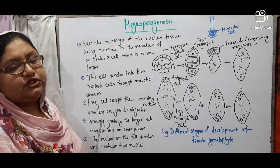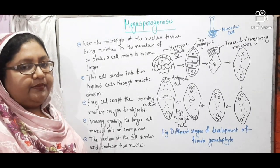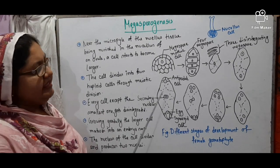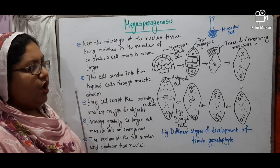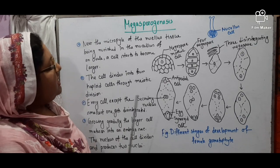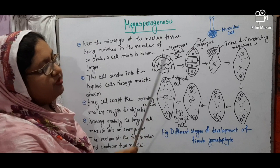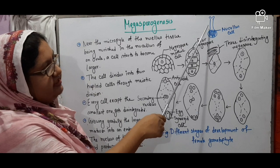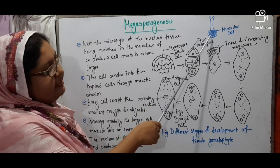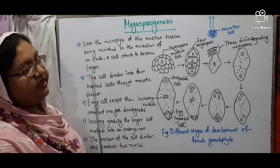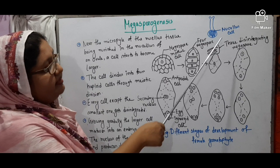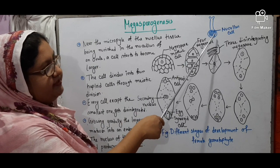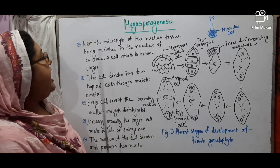Now, Megasporogenesis. What is Megasporogenesis? The process through which female gametes are produced in the plant is known as Megasporogenesis. This is the step of development of the female gametophyte. From this diagram, I want to make clear what Megasporogenesis is. This is the ovary of a flower. This is the style and this is the stigma. Inside the ovary, there are different cells and the nucellus cells form the nucellus tissue.